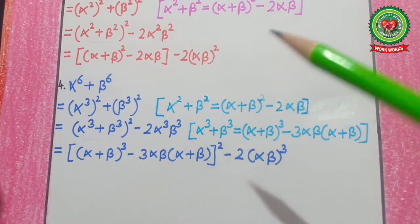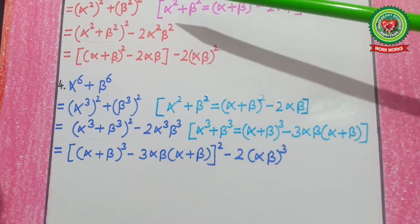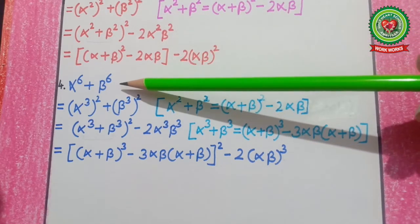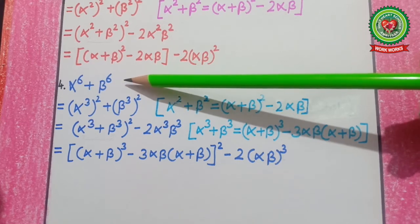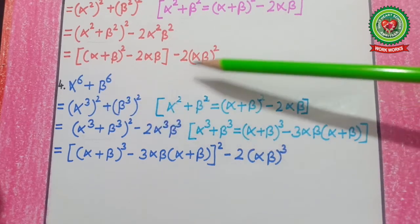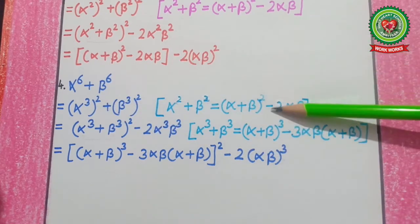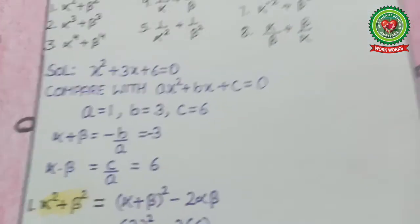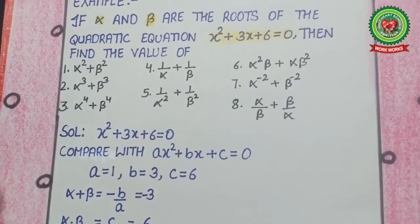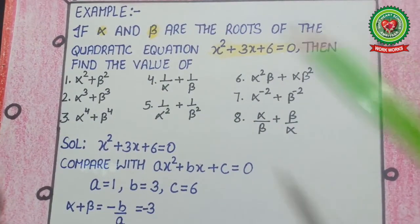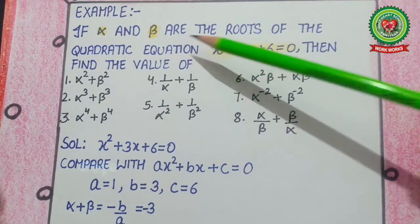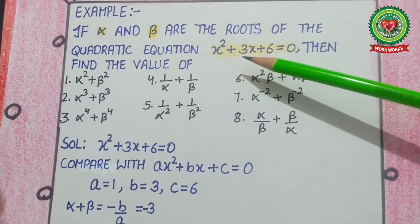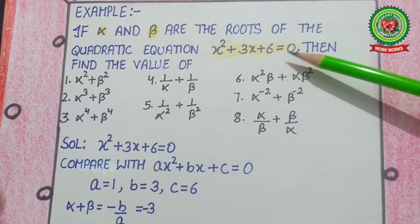So when solving α⁴+β⁴ and α⁶+β⁶, first we break the power, then apply these two formulas. Now let's look at an example related to this topic: if alpha and beta are the roots of the quadratic equation x²+3x+6 = 0, then find the values of the following expressions.